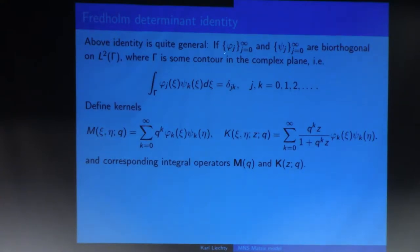Suppose I have, before I had Hermite functions, but suppose I have any bi-orthogonal system on some contour in the complex plane. So before, my contour was just the real line. But I can take any contour. I'll call it Gamma. So Phi's and Psi's are orthogonal on this contour, bi-orthogonal on this contour.